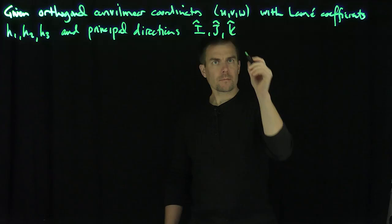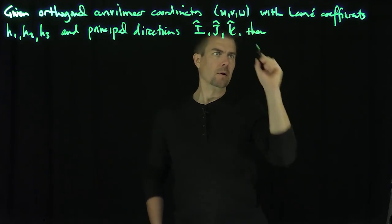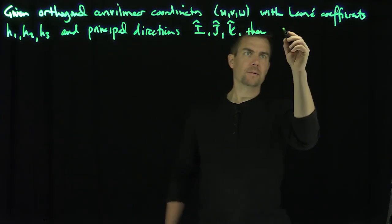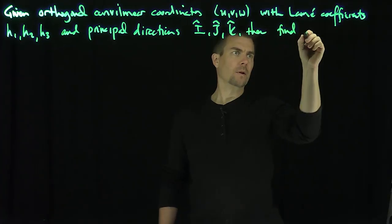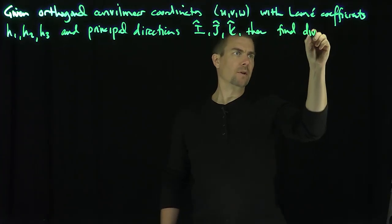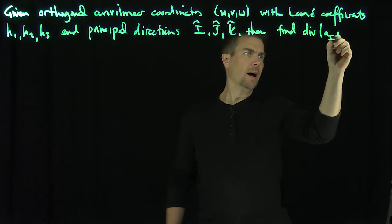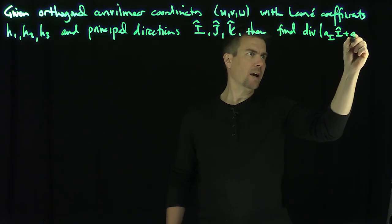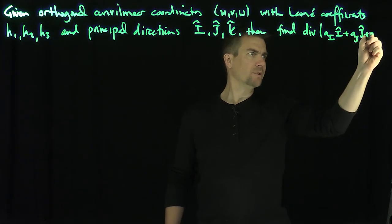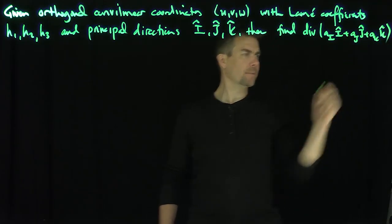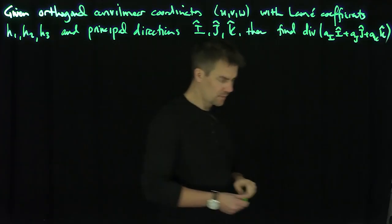Then let's find the formula for the divergence of a_i î + a_j ĵ + a_k k̂. So let's focus on one of these terms — specifically the first term.